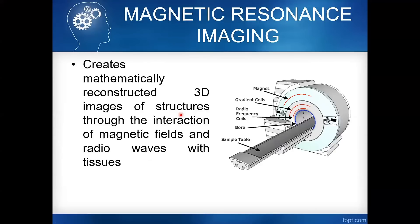During MRI examination, yung patient ay na-exposed sa strong magnetic field, na nanggagaling sa primary magnet na nasa loob ng gantry. Ito ay tinatawag nating external magnetic field. This is the reason why it's called magnetic, kasi sa procedure ng MRI, gumagamit tayo ng principles of magnetism or electromagnetism.